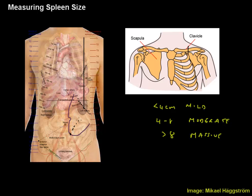You measure in centimeters in a straight line, and that will be your spleen size. For instance, in this case it would be approximately 16 centimeters, and we would say the spleen is palpable 16 centimeters below the left costal margin. Note that we are not measuring in a vertical direction as we do with the liver — we are measuring from the cross-sectional point to the furthest palpable point of the spleen.